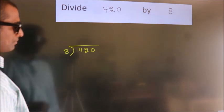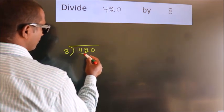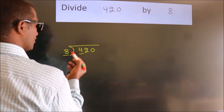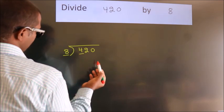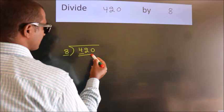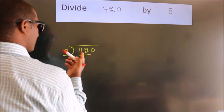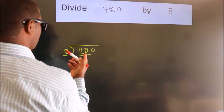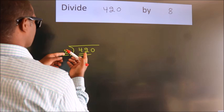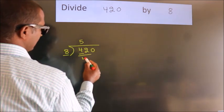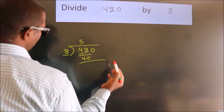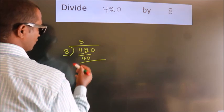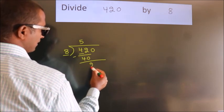Next, here we have 4, here 8. 4 is smaller than 8, so we should take 2 numbers: 42. A number close to 42 in the 8 table is 8 fives 40. Now we should subtract. We get 2.